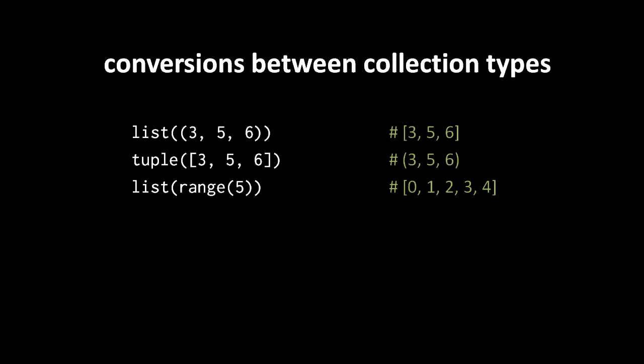For many kinds of collections, it makes sense to convert them into some other kind of collection. For example, if you have some tuple and want a list of all the same values, you can create one simply by passing the tuple to the list constructor. Likewise, you can get a tuple with all the same values as a list by passing the list to the tuple constructor. When you pass a range to the list constructor, you get a new list consisting of all of those same values. Note, though, that not all types can be converted into others this way — you can't convert a list into a range by passing the list to the range constructor; that simply doesn't work.